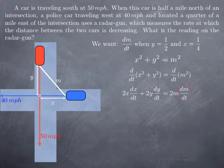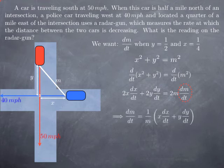What we are looking for is dm over dt and therefore we solve for this particular rate. We obtain 1 over m multiplied by x dx over dt plus y dy over dt.